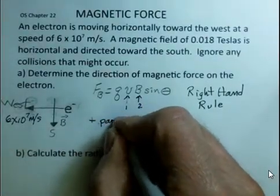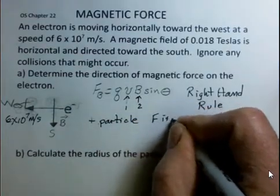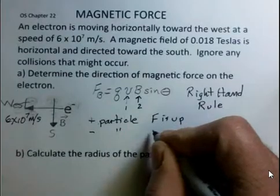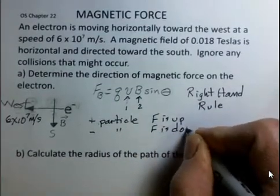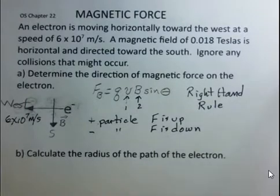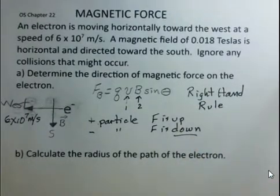So velocity, magnetic field, my thumb is pointed up. So the positive particle, the magnetic force would be up. Is the electron positive? No. The electron is negative. And what you do is just reverse the direction that your thumb is indicating. So the magnetic force on this electron will be down.